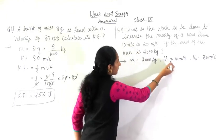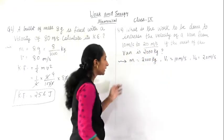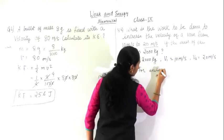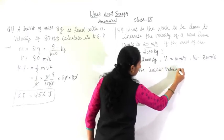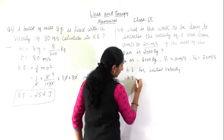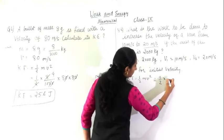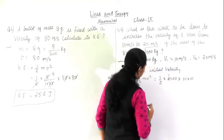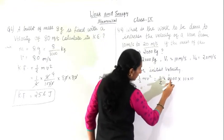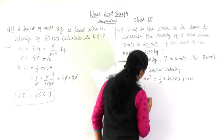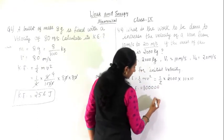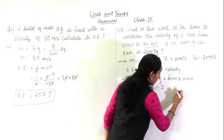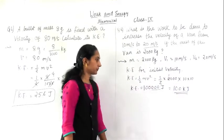10 meters per second is taken as V1 and 20 meters per second as V2. We need to find the kinetic energy separately. For initial velocity V1, the formula is KE equals half mv square: half, mass is 2000, and V square is 10 into 10. Here 2 and 2 get cancelled, giving 1 into 1000 into 100 — that is 100,000, which means 1 lakh joule, or 100 kilo joule.